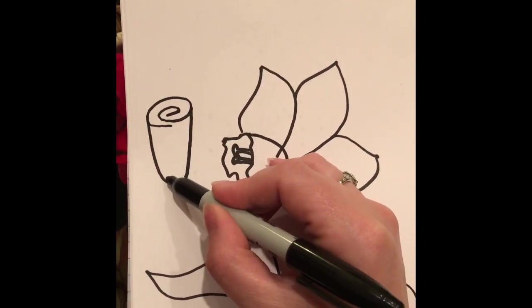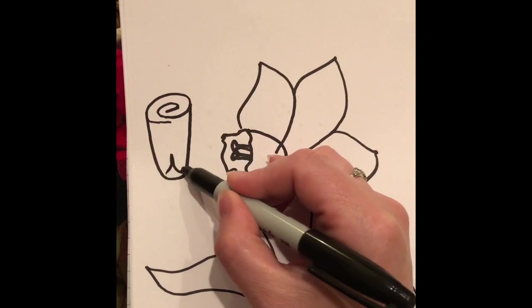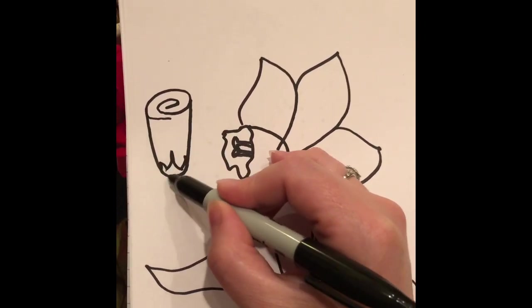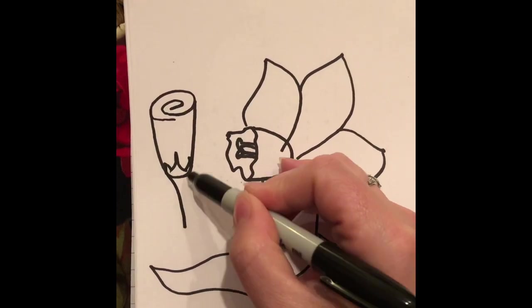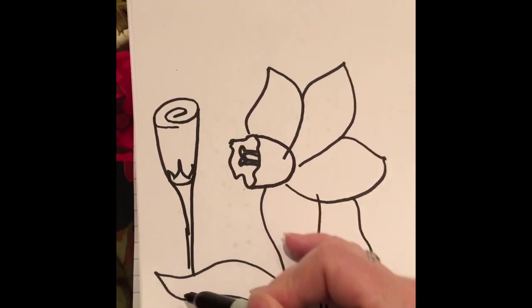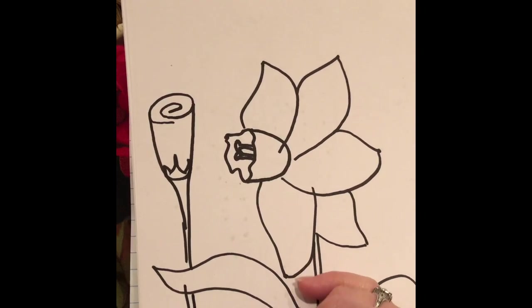Then I'm going to make a large U underneath that swirl. Then you can make some little marks. That's usually the green part that kind of holds the rose together. Then I'm going to come down with my stem.